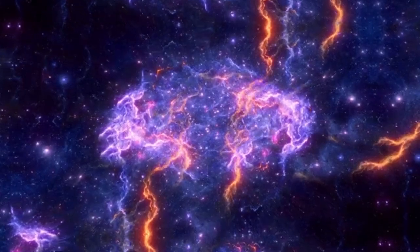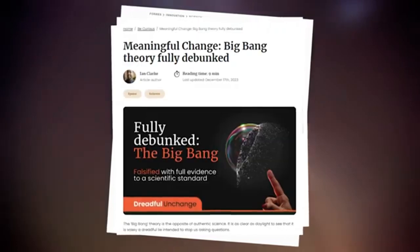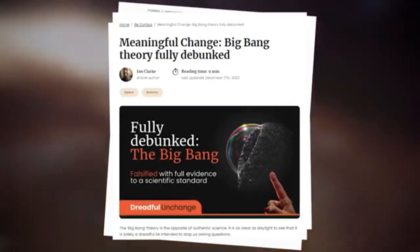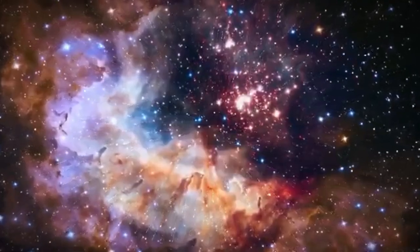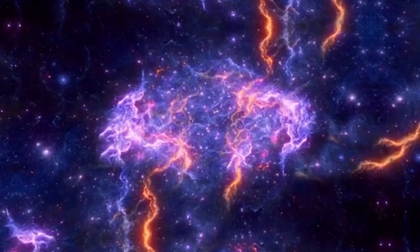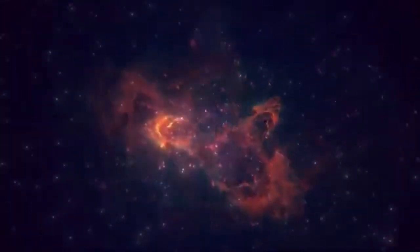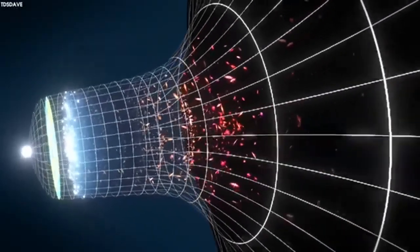One pivotal moment in this quest occurred when astronomer Rohan Natu, working with data from the telescope, stumbled upon a galaxy dating back a mere 300 million years after the Big Bang, making it the oldest galaxy ever observed. Natu's discovery sent shockwaves through the scientific community, underscoring the transformative potential of the James Webb Telescope.